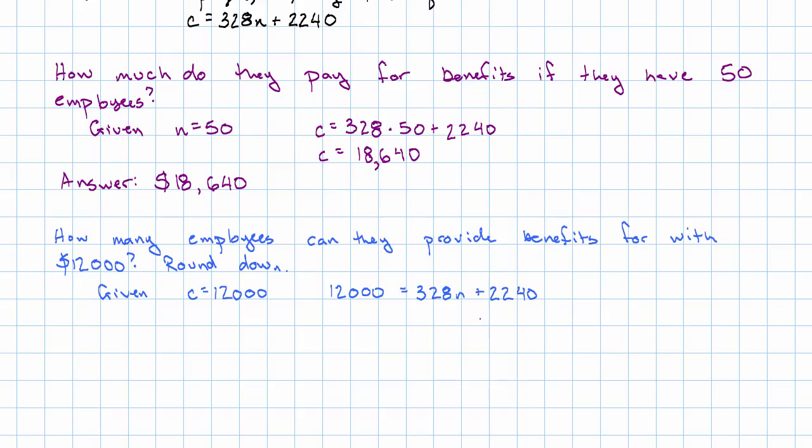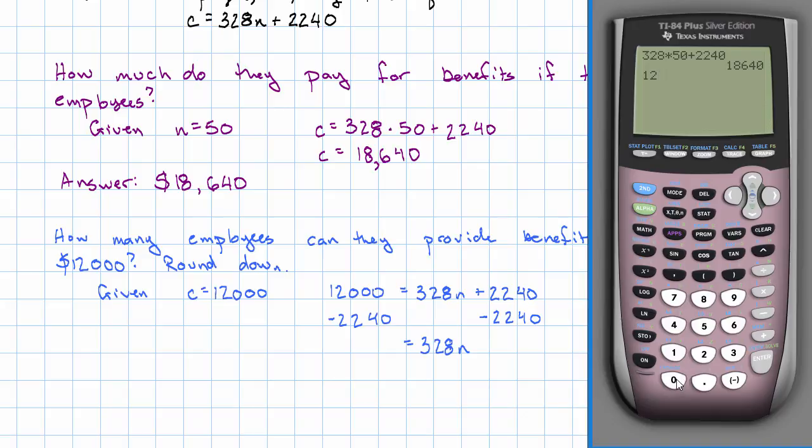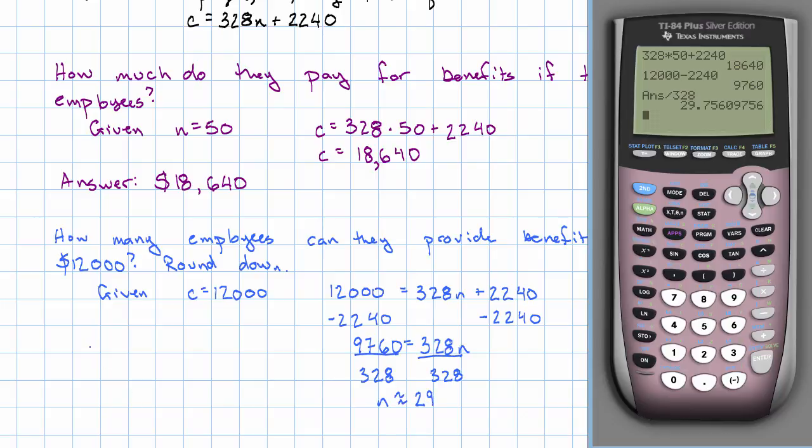Well, we solve for N. Subtract 2240 on both sides. So 12,000 minus 2240 is 9760. Now we divide both sides by 328. And it says round down. N is about 29. Our answer: 29 employees.